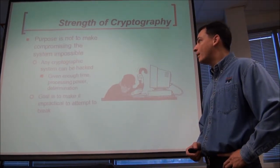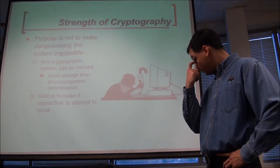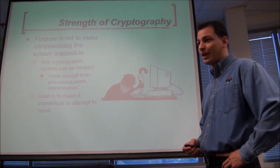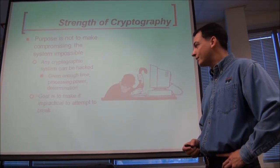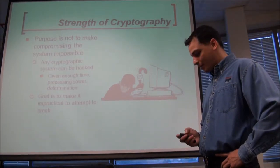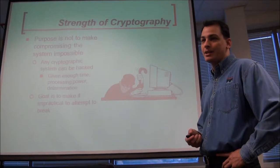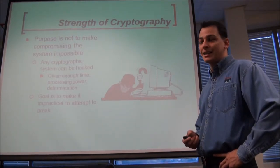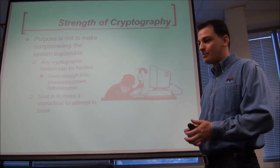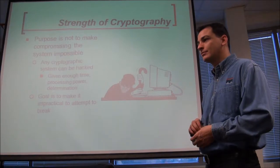The purpose is not to make compromising the system impossible. Now is a good time to talk about Moore's Law — processing speed doubles every 18 months. So that's an exponential graph, not a linear one. Even though we say 72 quadrillion years, that's based on today's computing power, which is a linear assumption. So it probably won't take that long. There are a lot of arguments right now about whether Moore's Law will hold.